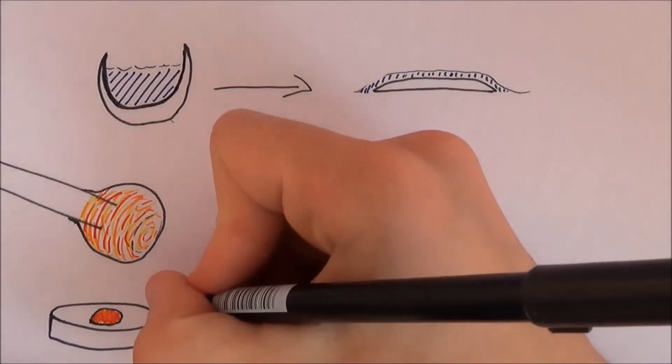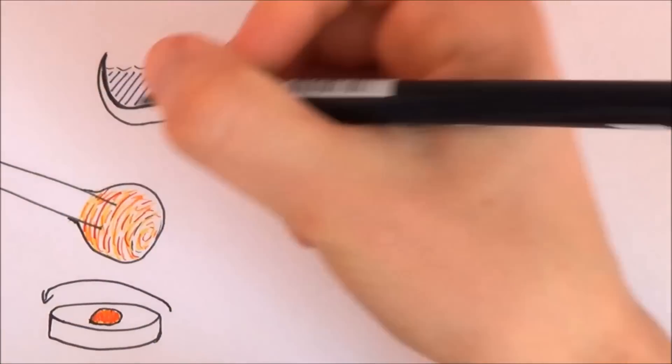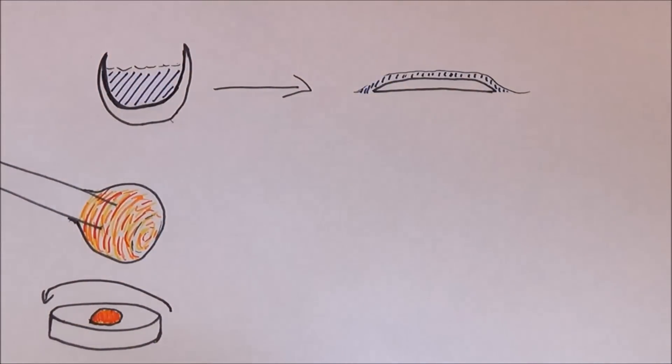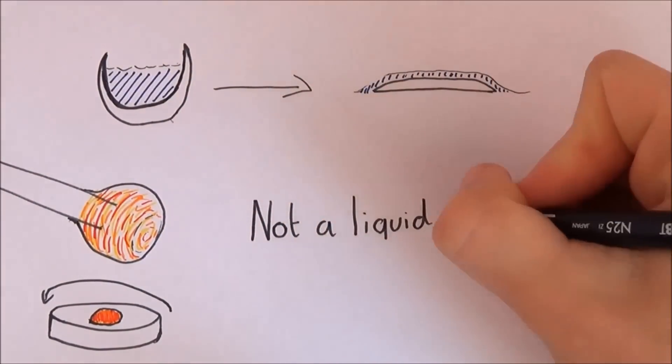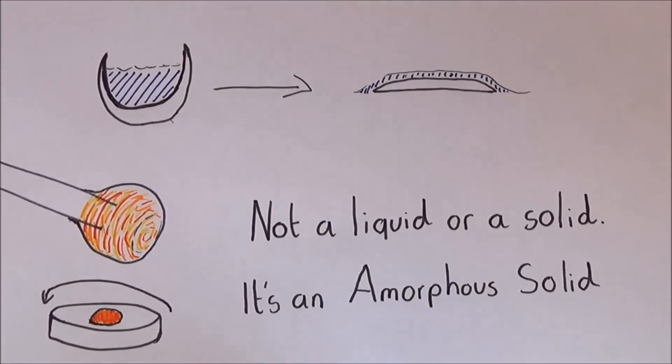When it is spun into a disc, it causes the glass to be thicker on the outside of the disc than in the middle. And because they weren't idiots then, they installed the glass heavy side down. So glass is not a liquid, but it's not a solid either, it's an amorphous solid, which is somewhere in between.